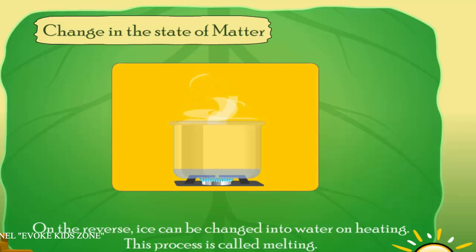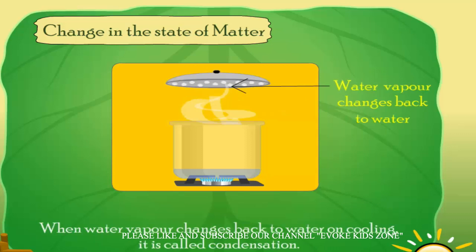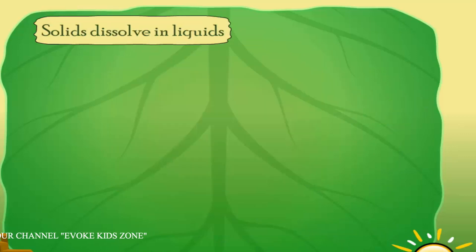When water is boiled till 100 degrees Celsius, it changes into water vapor. This process is called evaporation. When water vapor changes back to water on cooling, it is called condensation.